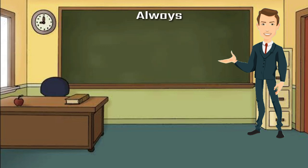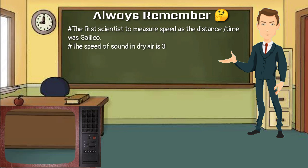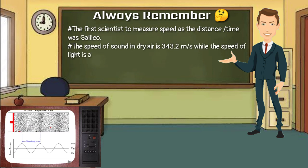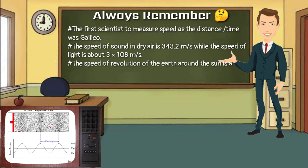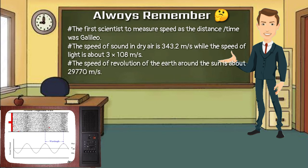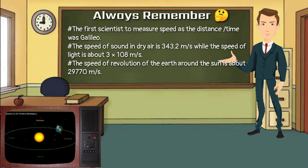Always remember: the first scientist to measure speed as distance divided by time was Galileo. The speed of sound in dry air is 343.2 meters per second, while the speed of light is about 3 × 10⁸ meters per second. The speed of revolution of Earth around the Sun is about 29,770 meters per second.